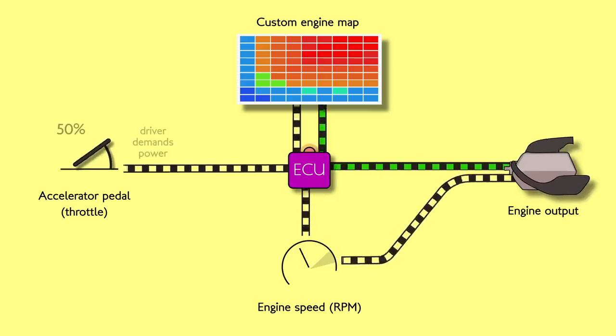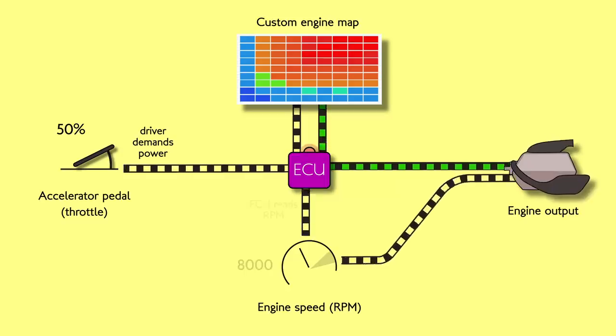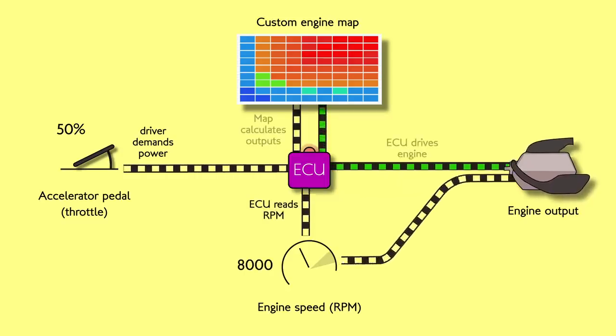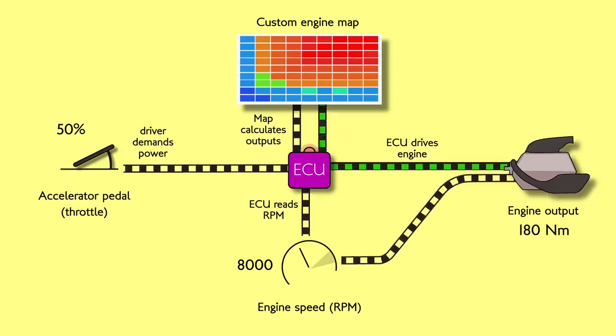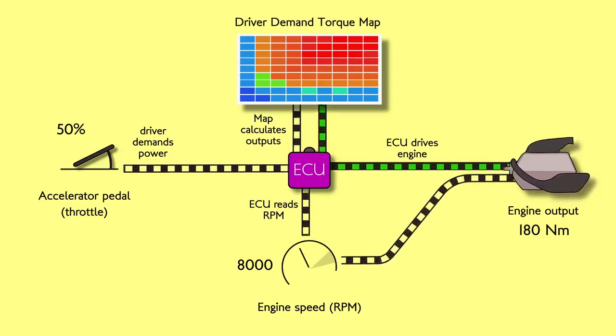We're going to tell the engine, if I'm pushing the throttle halfway and you're revving at 8000 RPM then you better give me 180 Nm of torque or whatever. This engine map is sometimes referred to aptly as the driver demand torque map, as the driver demands a certain output from the engine by applying the throttle pedal.